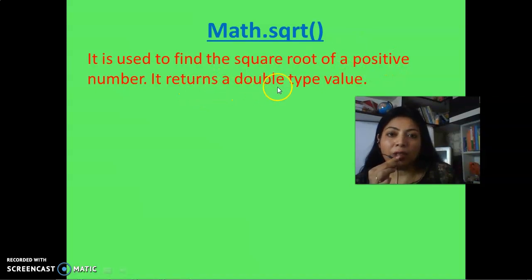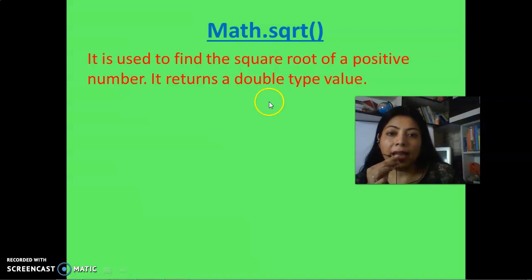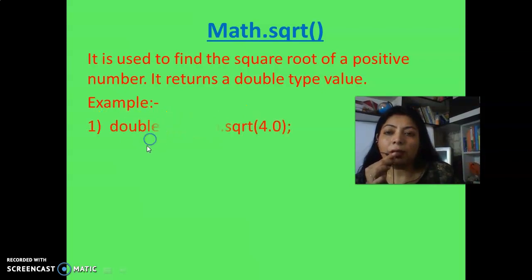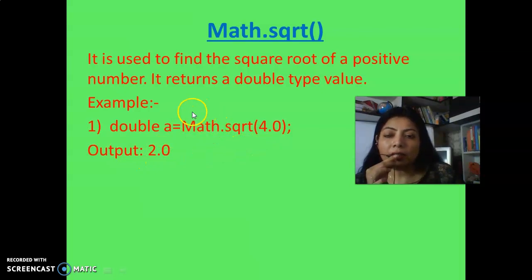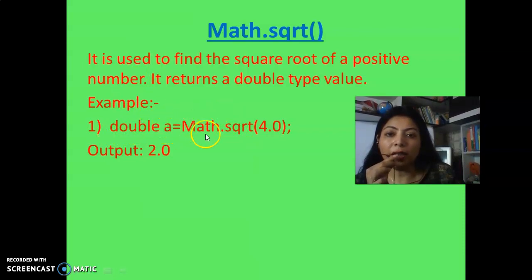The return type of this function is double, so the variable where you store the result should be a double type variable. For example: double a = Math.sqrt(4.0). The square root of 4 is 2, so it returns 2. You must store it in a double type variable only because Math.sqrt returns a double. So write double, then any variable name, equals, then use the function.